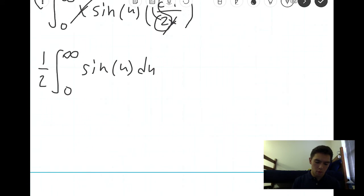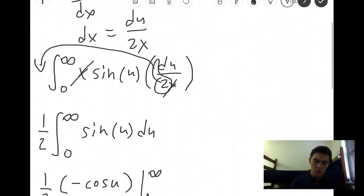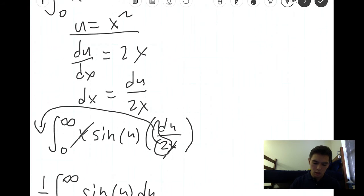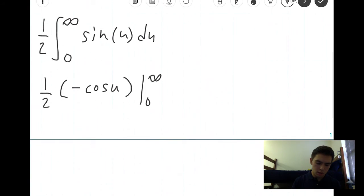So we have one half negative cosine u, which is integral of sine, and we're evaluating that from zero to infinity, and we set u equal to x squared. So let's plug that back in here. Cosine x squared from zero to infinity.